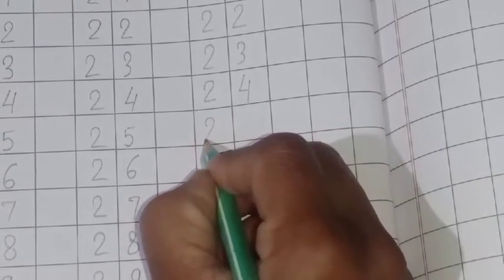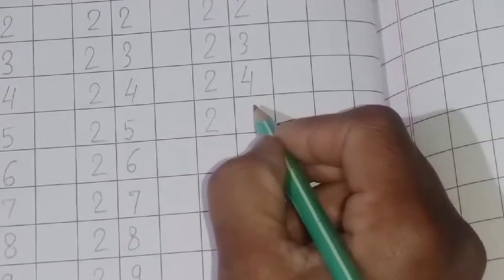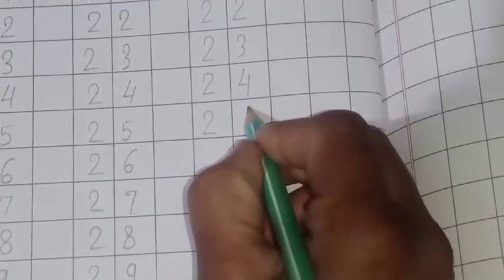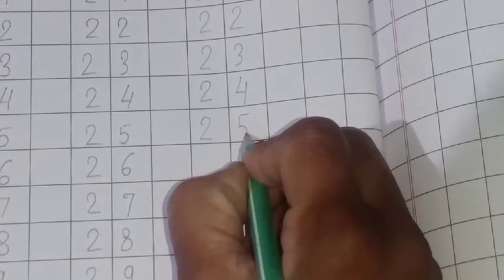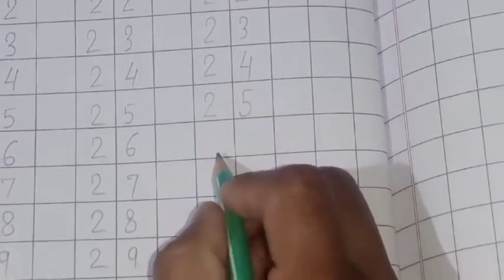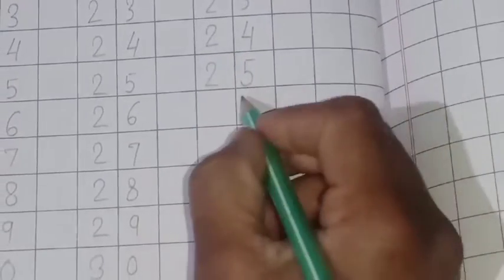Now next spelling 25. T-W-E-N-T-Y, twenty. F-I-V-E, five. 25.